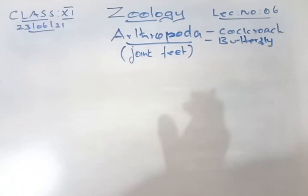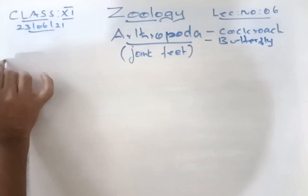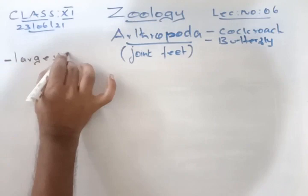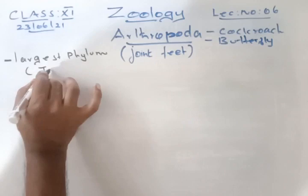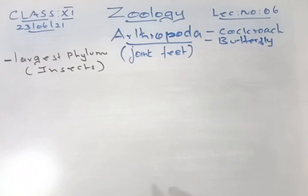Arthropoda is the largest phylum of the animal kingdom because it includes many insects. All insects come under this phylum, making it the largest phylum.